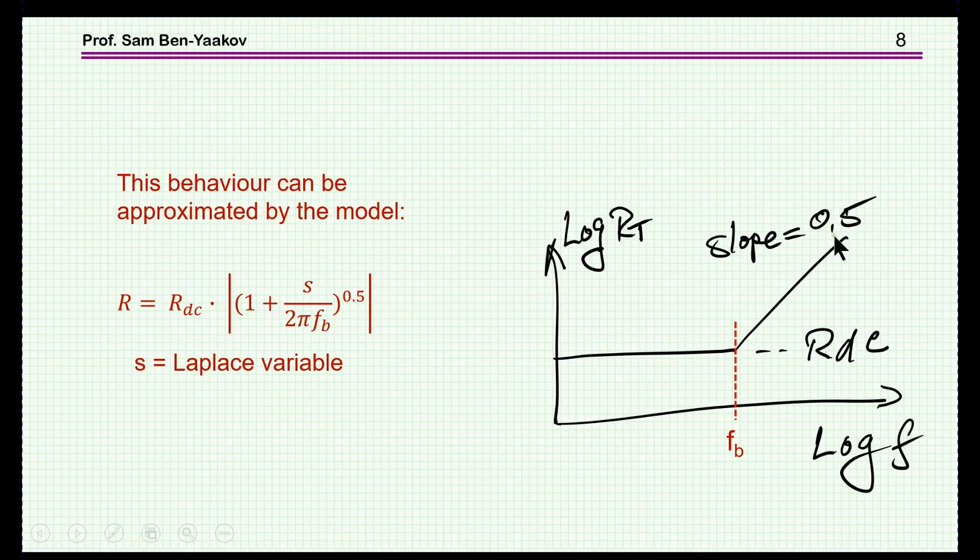Therefore, we can express this as 1 plus s, this is the Laplace transform variable, over 2 pi fb, this is the omega break point, but to the power of 0.5 rather than 1 in a regular zero, and this is just the coefficient here, this value.